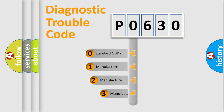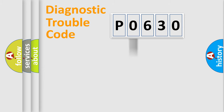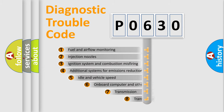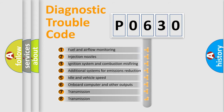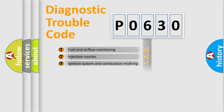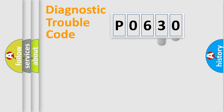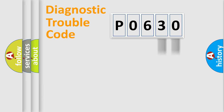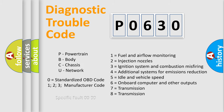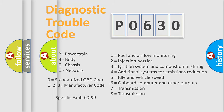If the second character is expressed as zero, it is a standardized error. In the case of numbers 1, 2, or 3, it is a more specific expression of a car manufacturer's error. The third character specifies a subset of errors. This distribution is valid only for the standardized DTC code, and only the last two characters define the specific fault of the group. Such a division is valid only if the second character code is expressed by the number zero.